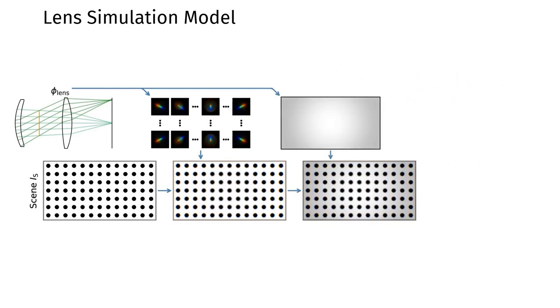Second, we estimate the relative illumination at different field values, then multiply the illumination map pixel-wise with the image.